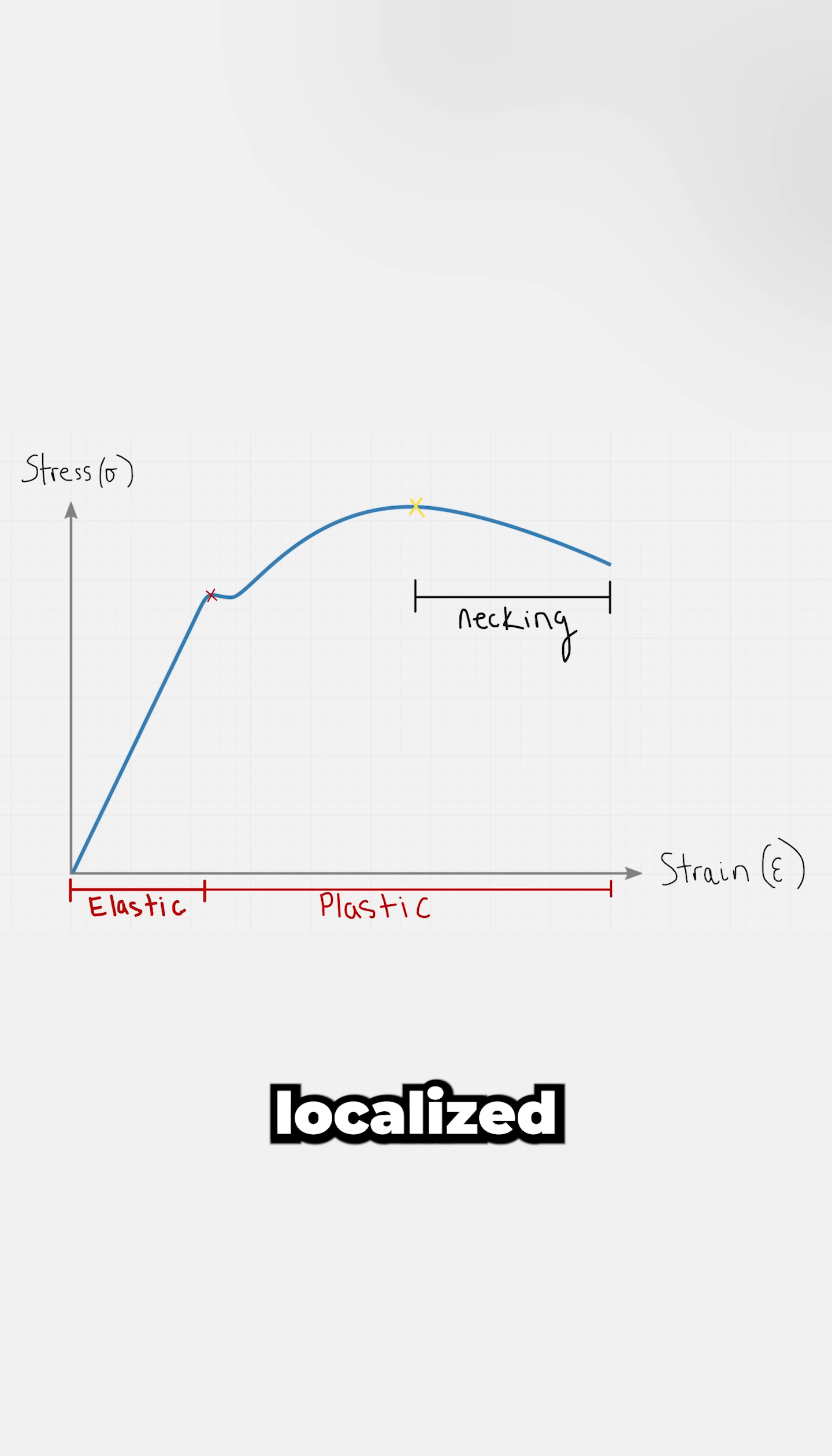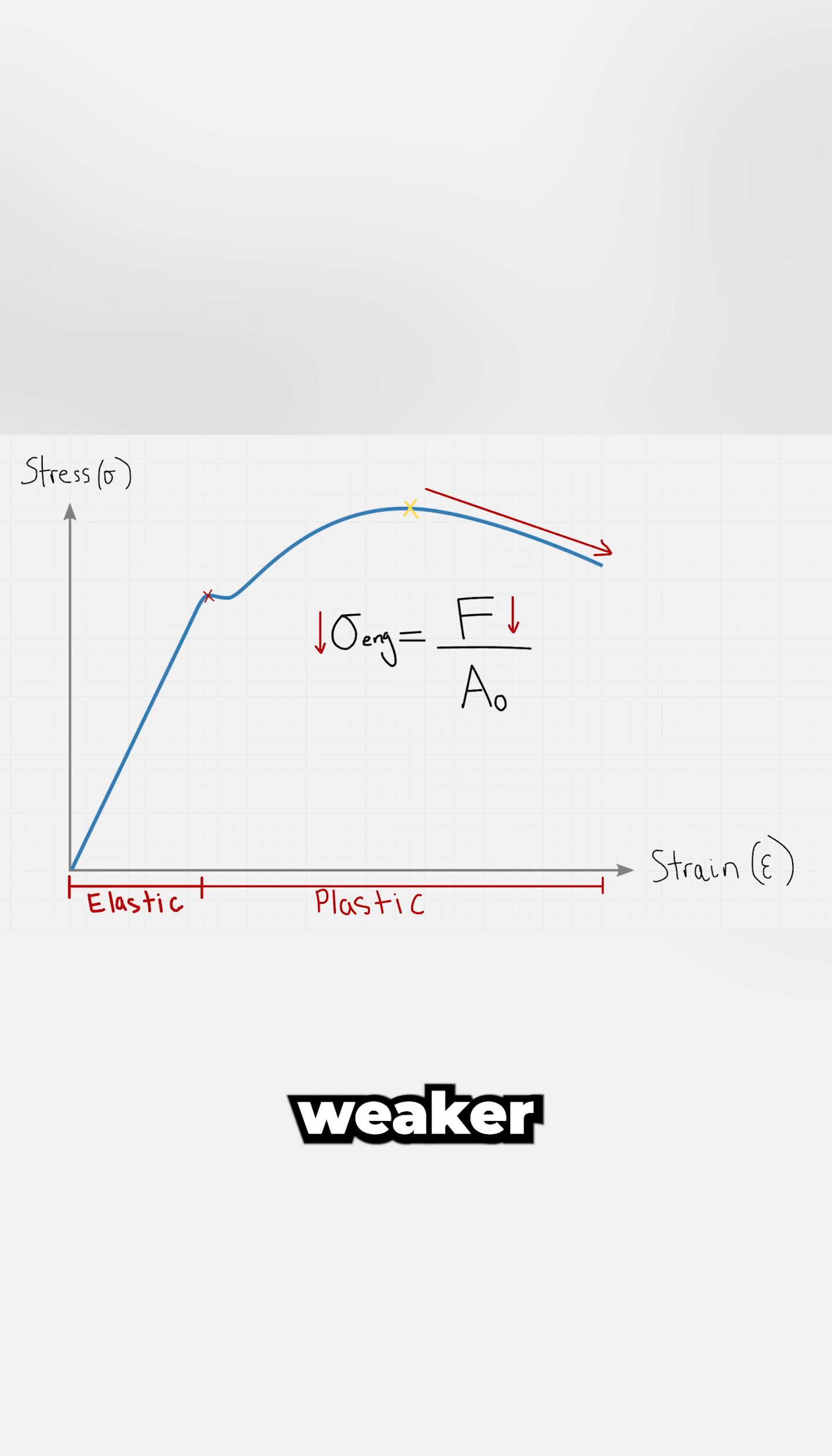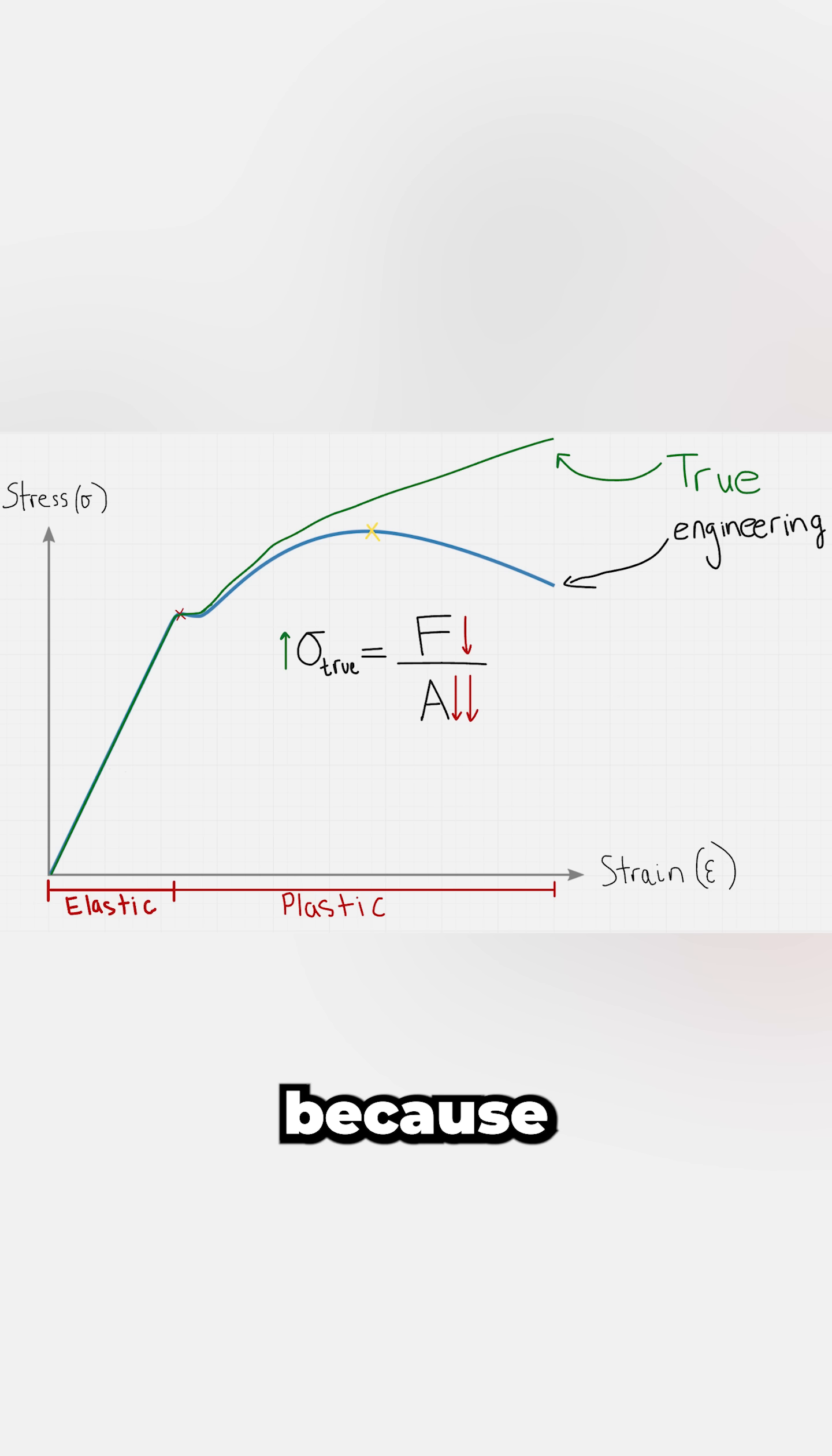After that, we see necking, a localized thinning where the cross section shrinks quickly. This is where the material appears weaker on the graph, but in reality, the true stress is still going up because the area is shrinking faster than the load drops.